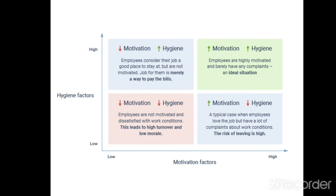When there is high motivation but low hygiene, a typical case occurs where employees love their job but have many complaints about the work conditions — so the risk of leaving is high. The fourth condition is when motivation is high and hygiene is also high: employees are highly motivated, barely have any complaints, and it is the ideal situation.